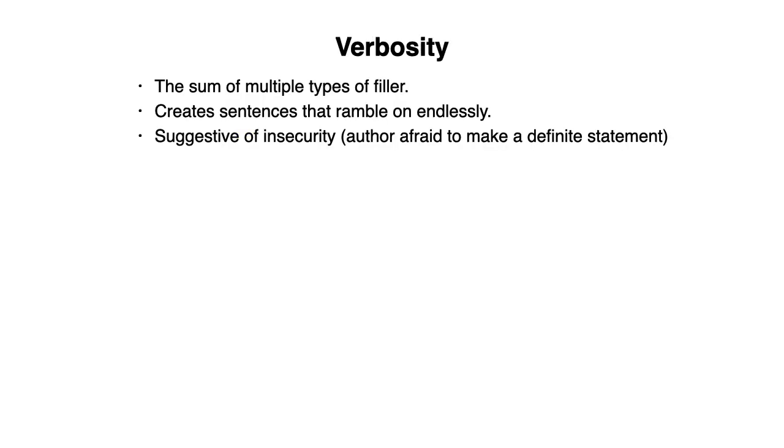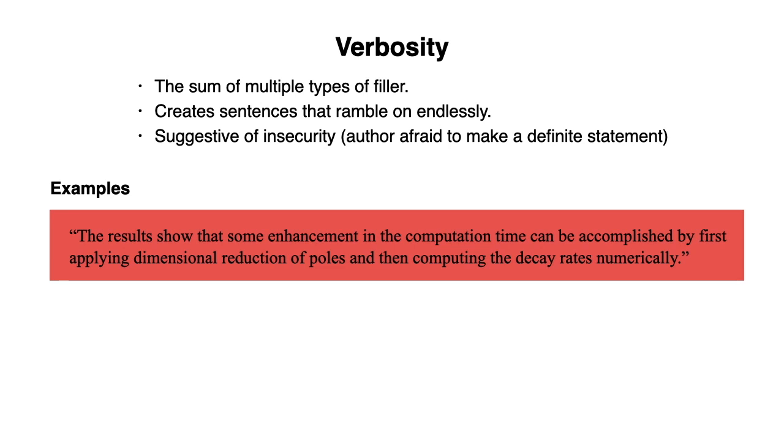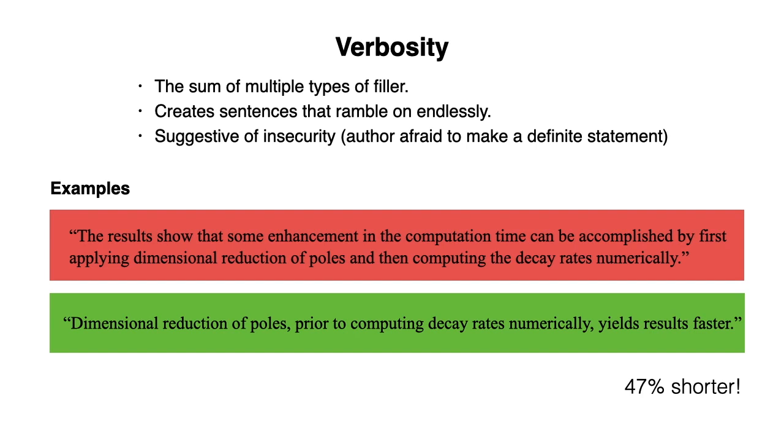Finally, let's talk about verbosity. Verbosity is the sum of multiple types of filler. It creates sentences that ramble on endlessly. And it's suggestive of insecurity. Maybe the author is afraid to make a definite statement. Here is an example. The results show that some enhancement in the computation time can be accomplished by first applying dimensional reduction of poles and then computing the decay rates numerically. Now compare this with the following. Dimensional reduction of poles, prior to computing decay rates numerically, yields results faster. The second one says the same thing, but it's more to the point. And it's 47% shorter.